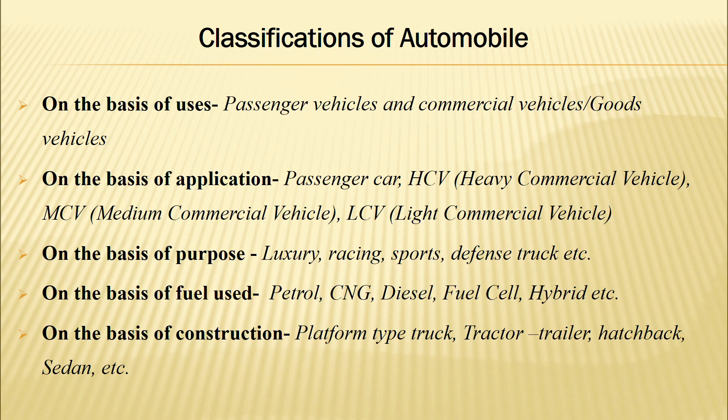We classify automobiles on different bases. The first basis is usage: on the basis of use, vehicles are classified as passenger vehicles and commercial vehicles. If used for passengers, it is known as a passenger vehicle; if used commercially, it is known as a commercial vehicle or goods vehicle.